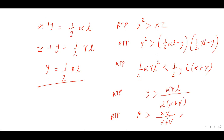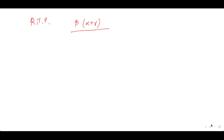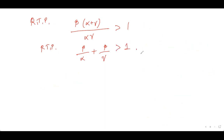Taking everything on one side and multiplying and dividing by αγ, we get β(α + γ)/(αγ) > 1, which is equivalent to β/α + β/γ > 1. If we can prove this, we are done.